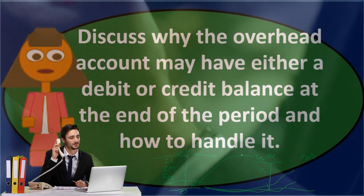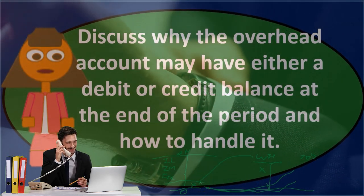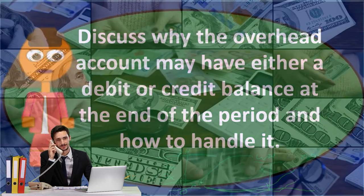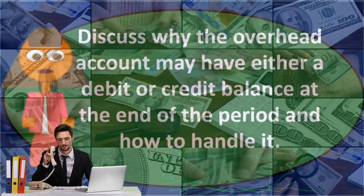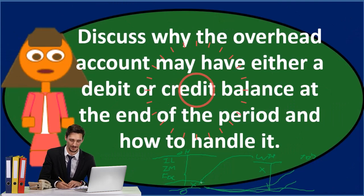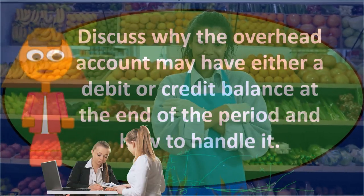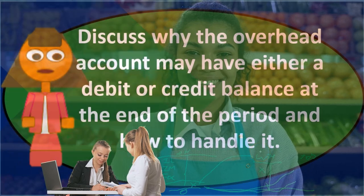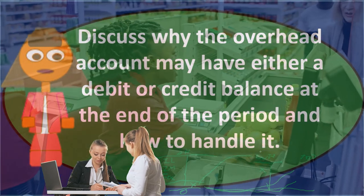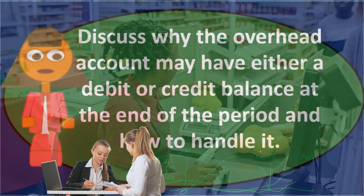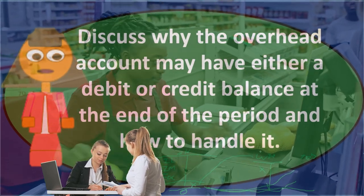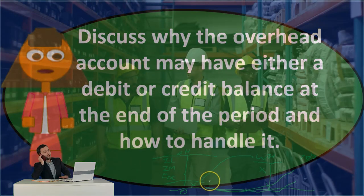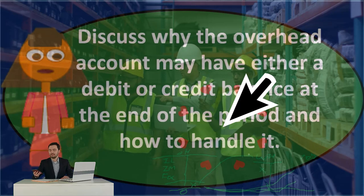Now, if the under- or over-applied amount is material — meaning our estimate was significantly off — we can't simply write it off to cost of goods sold, because it would distort net income and affect decision-making. In that case, we need to allocate the balance among the three places where overhead costs could reside: work in process, finished goods, and cost of goods sold. We determine an allocation method and distribute the remaining overhead balance proportionally across those three accounts.